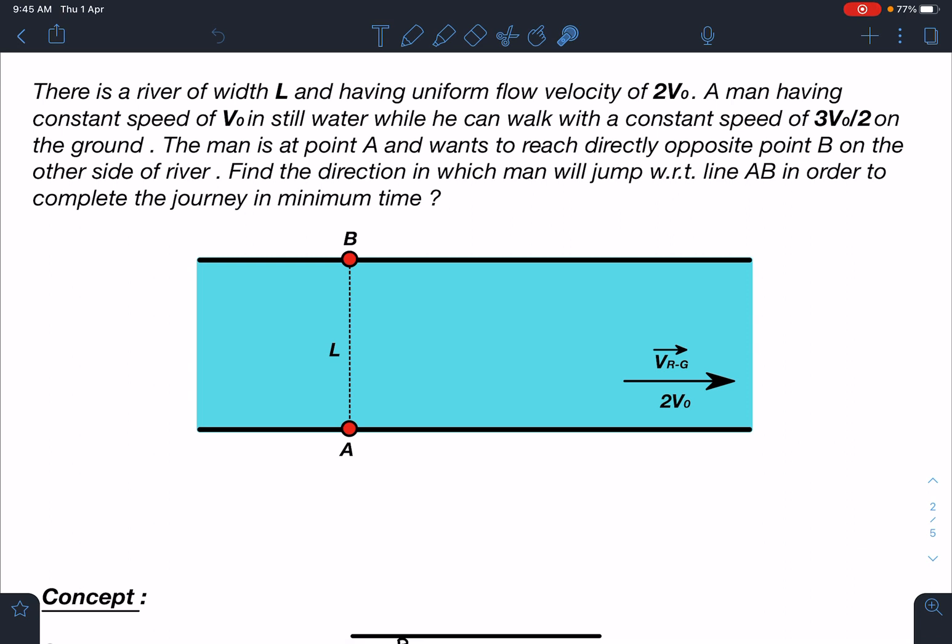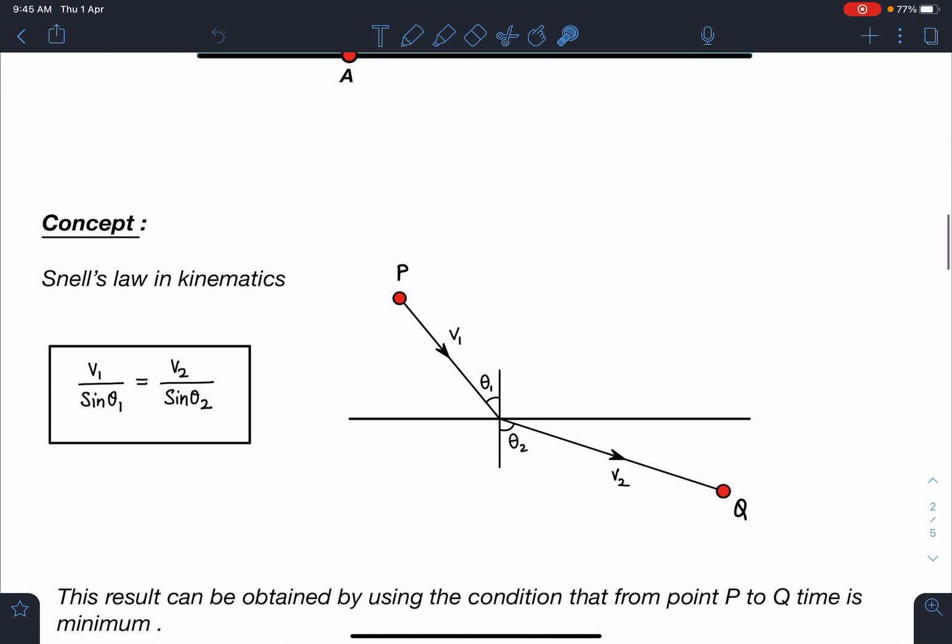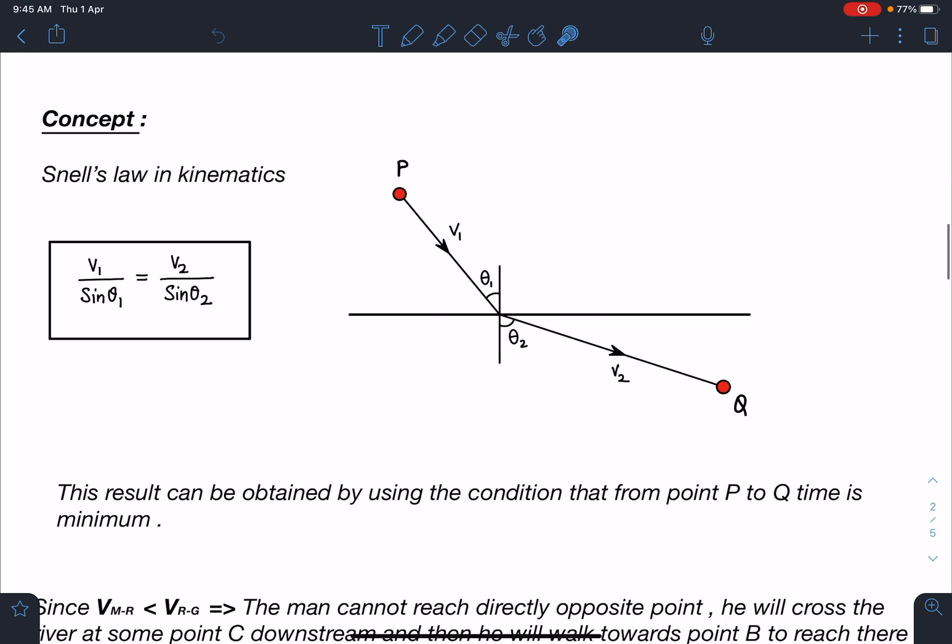The concept here is we can use Snell's law in kinematics. Suppose there is a point P and this is medium one - you can say ground or water or whatever you can say - proper road. And other side it is a rough ground or this is river one and this is river two. Such type of situations we can use Snell's law. So point P to Q, this man wants to reach in minimum time.